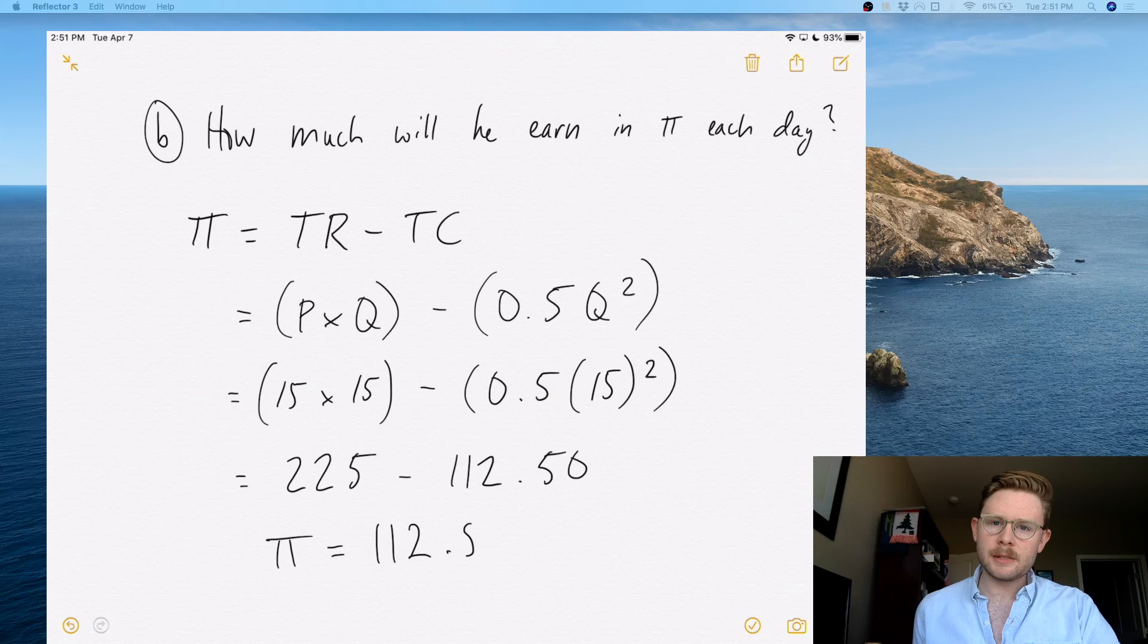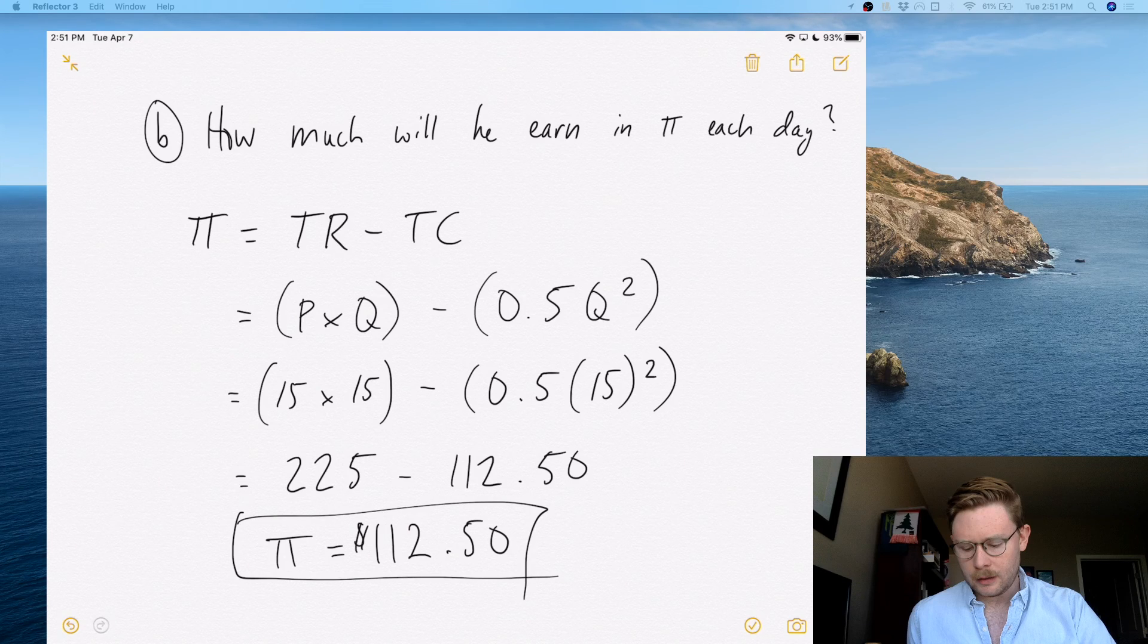The next one's going to be a little bit more difficult, but there's a pop-up question that looks just like this. I think the total cost function is a little more complicated than 0.5Q², but hopefully that doesn't trick you up too much. It's always just substitution.